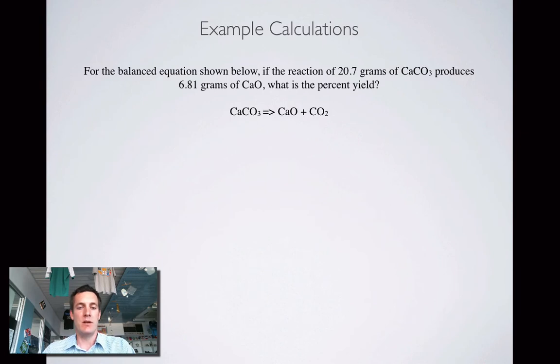Here's another one. For the balanced equation shown below, the reaction of 20, so we've got 20.7 grams of calcium carbonate and got 6.81 grams of calcium oxide, what is the percentage yield? So this is going at it from the other way. Now we're trying to find the percentage yield.